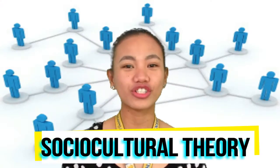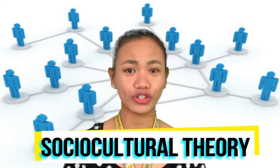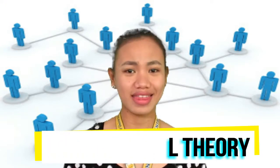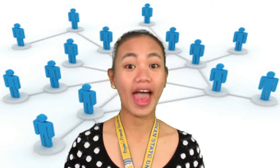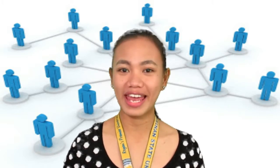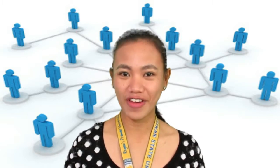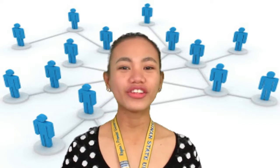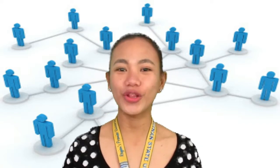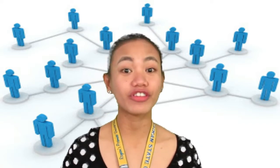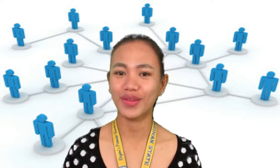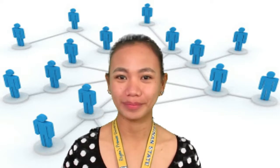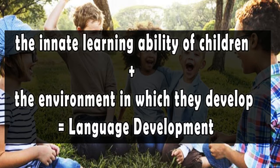The Interactionist Approach, or Sociocultural Theory, combines ideas from sociology and biology to explain how language is developed. According to this theory, children learn language out of the desire to communicate with the world around them. The innate learning ability of children plus the environment in which they develop equals language development.